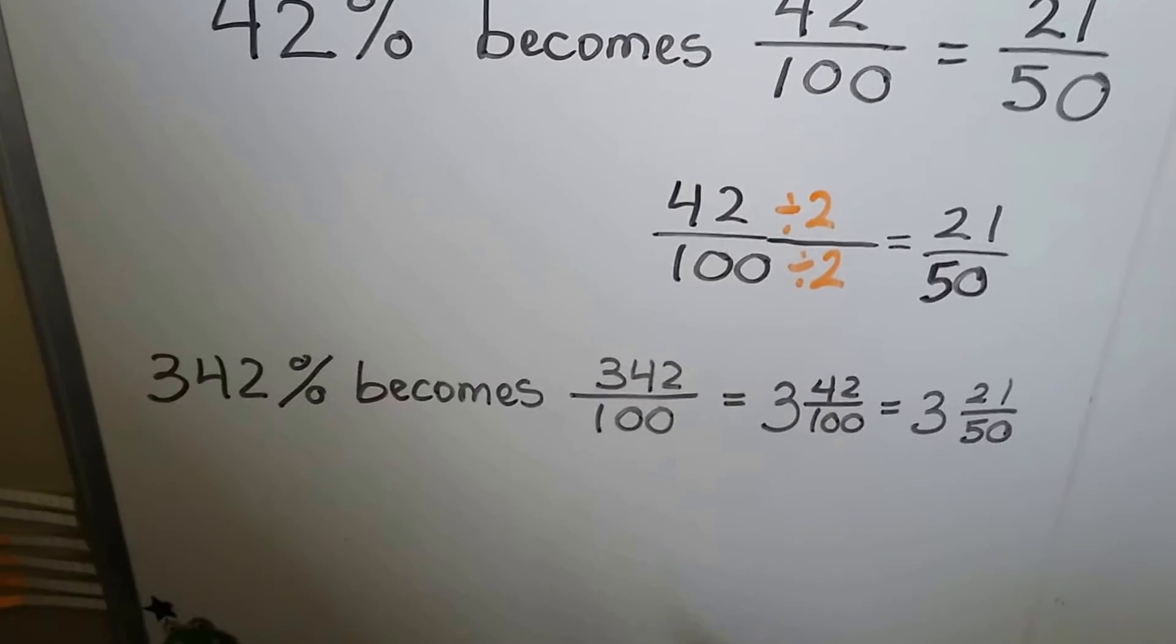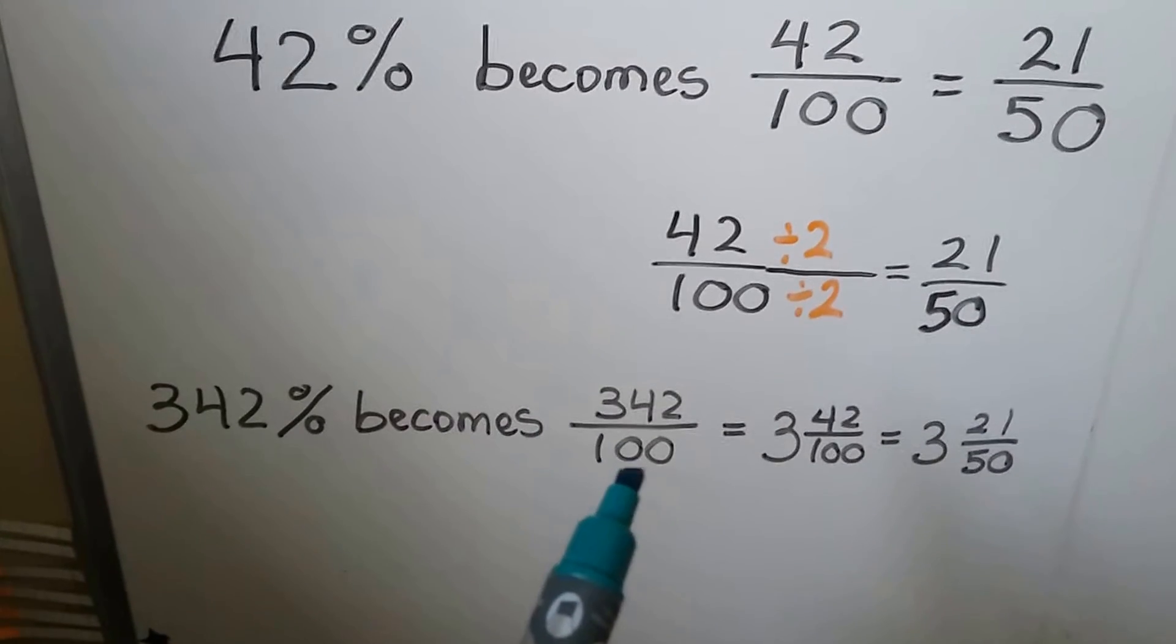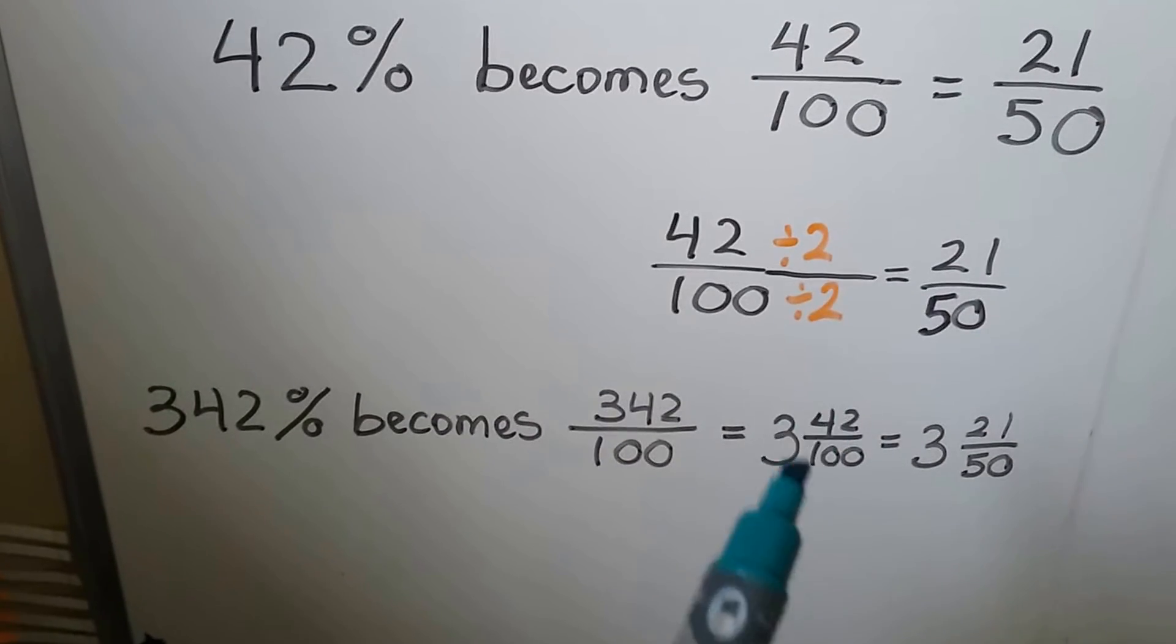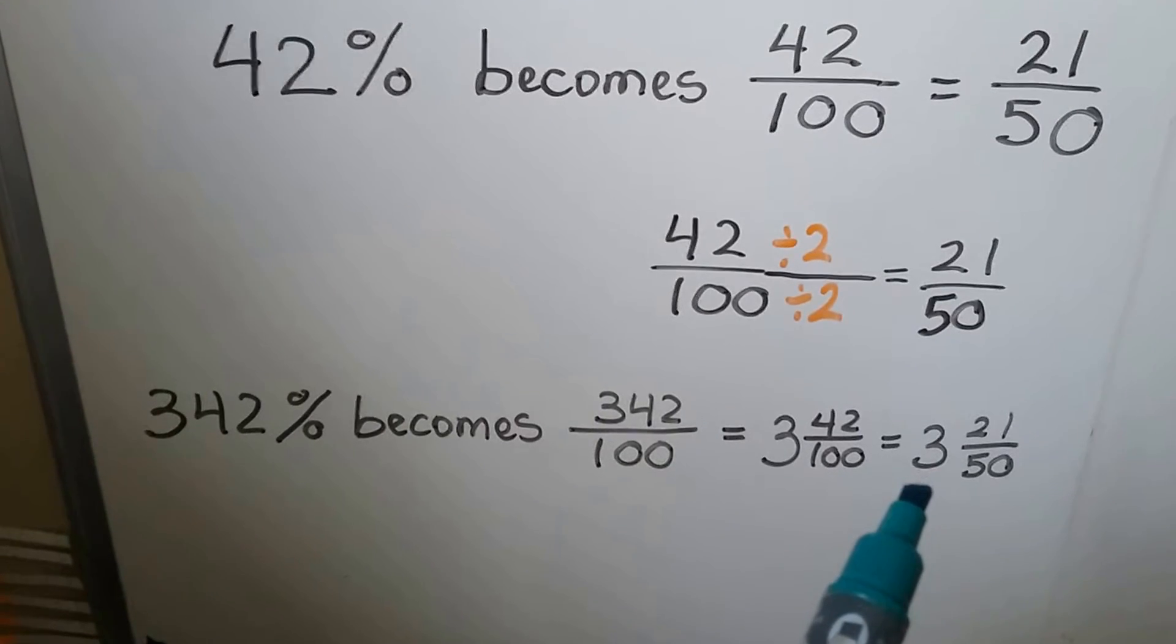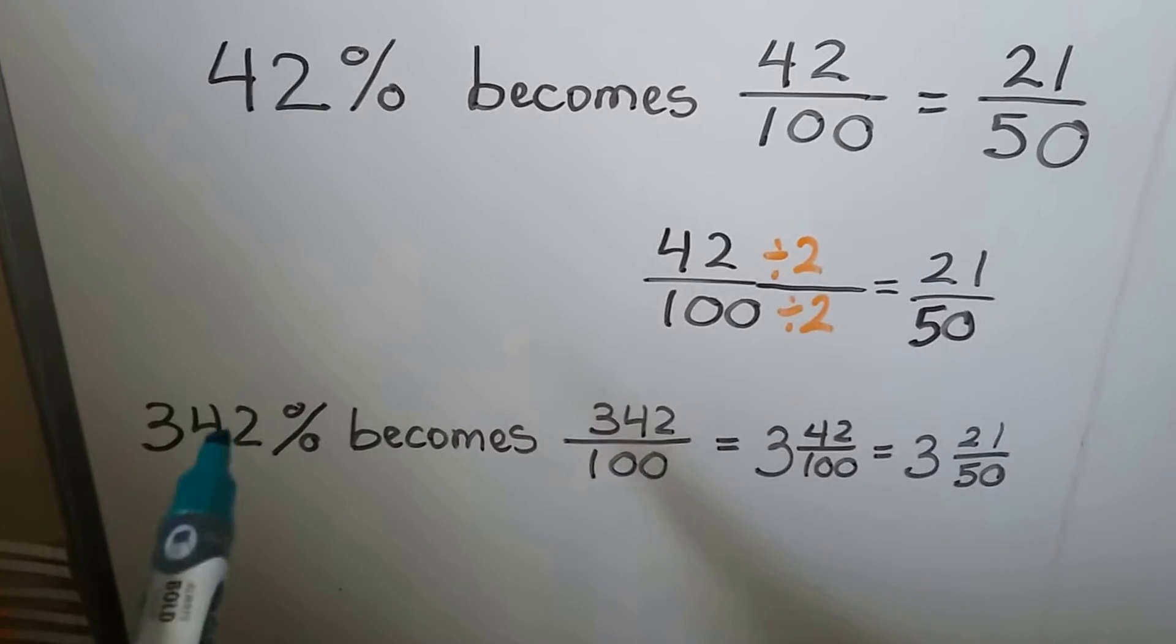If we have 342 percent, that becomes 342 over 100. We can simplify that to 3 and 42 hundredths, which then simplifies to 3 and 21 fiftieths. See? So it's real easy.